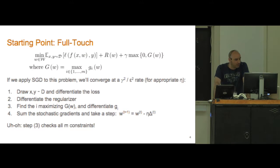We differentiate the regularizer to give us a gradient of the second term. For the third term we have to find the index that maximizes the uppercase G, that is we have to identify the most violated constraint, then we differentiate that and add it into our stochastic gradient. We take a step in the opposite direction.